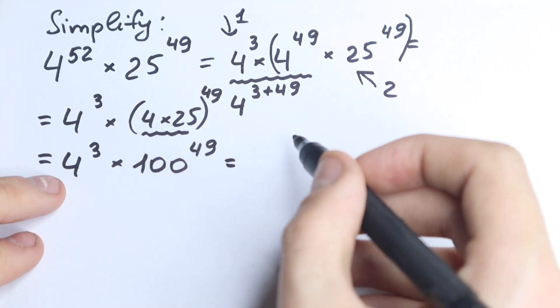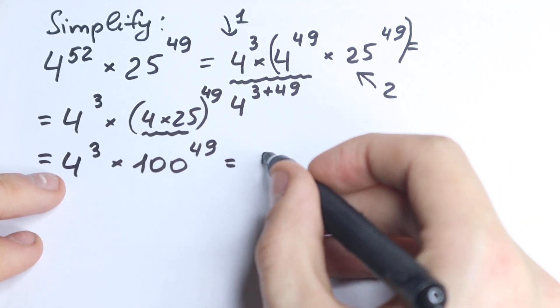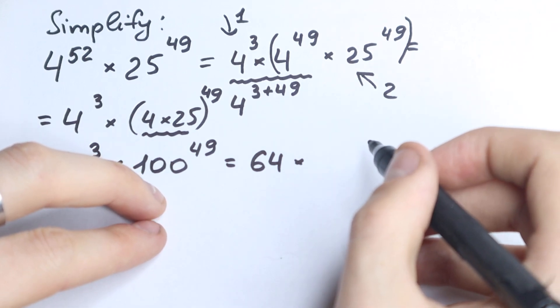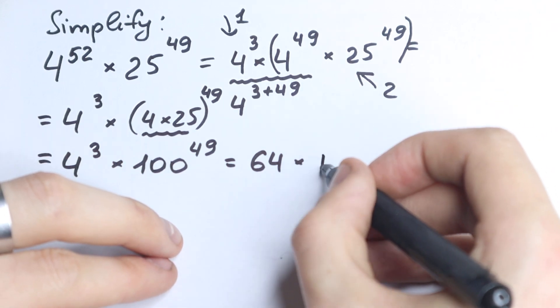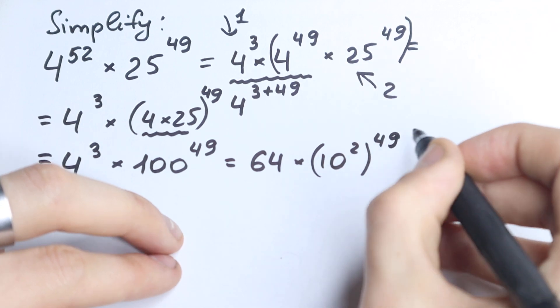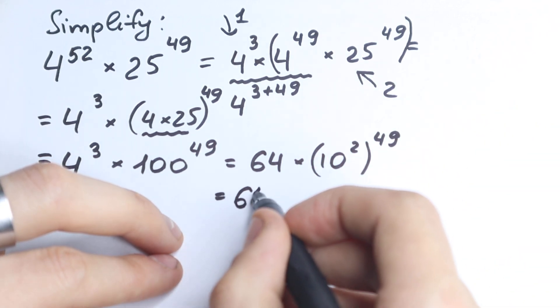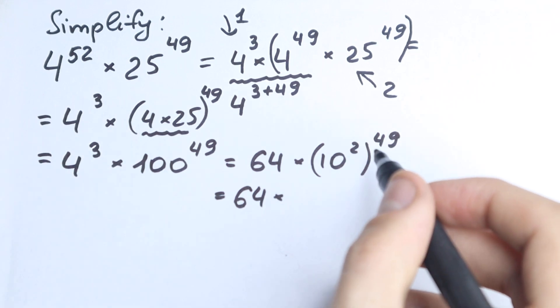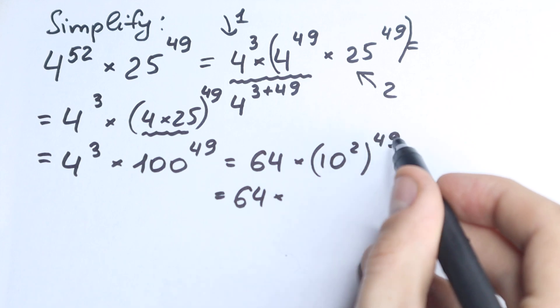So take a look closely. 4 cubed equals 64, we can easily write it. And times we have 100, we can write it as 10 squared. We have 10 squared raised to the power 49, which is equal to 64 times 10 to the power of 10 squared to the power 49, which is equal to 10 to the power 2 times 49.